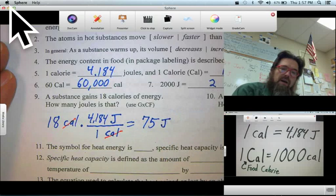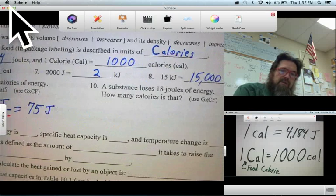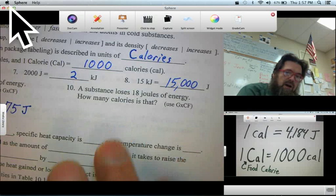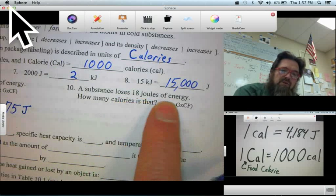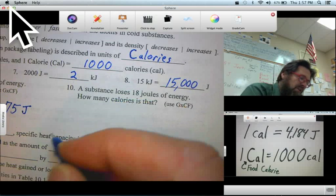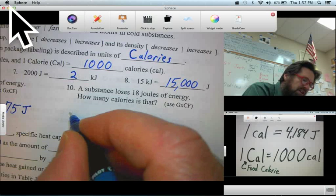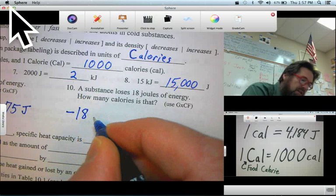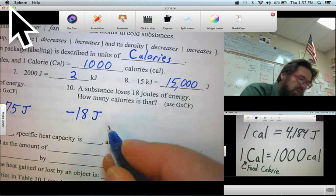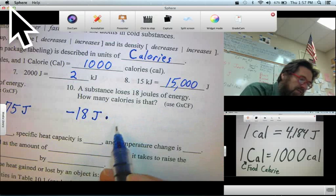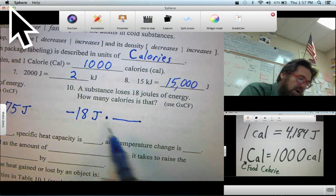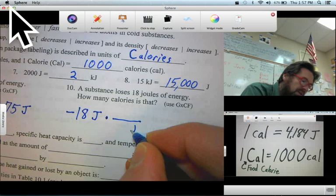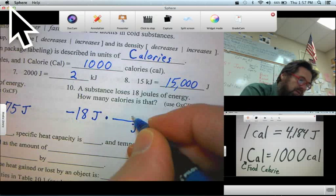Okay, next problem, very similar. Number 10. A substance loses 18 Joules of energy. How many calories is that? Well, if we're losing 18 Joules of energy, that is minus 18 Joules. Let's convert to calories. Divided by. We're going to get out of Joules. So, we put that unit in the bottom. Into calories.